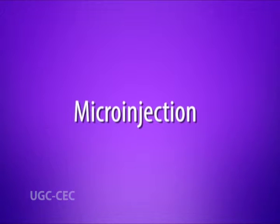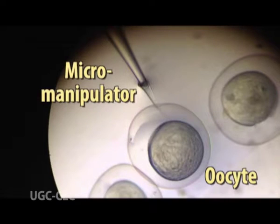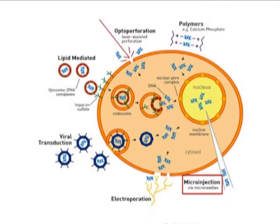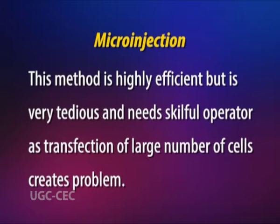Second is microinjection. It is a method to transfect a single cell, like an oocyte, with nucleic acids or protein. It can also be used to transfer DNA into embryonic stem cells to generate transgenic animals. This technique involves the use of a micromanipulator or microsyringe with a low-power stereoscopic dissecting microscope. A very fine-tipped pipette is inserted into the cytoplasm of the cell or directly into the nucleus. This method is highly efficient but is very tedious and needs a skillful operator, as transfection of a large number of cells creates problems.